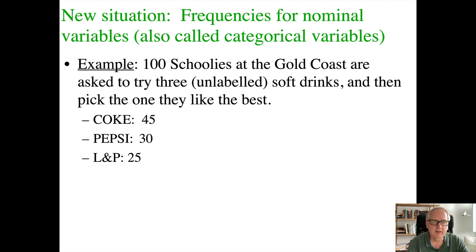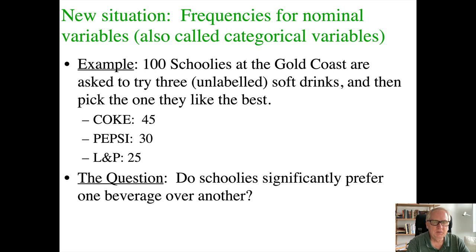Here are the results. Of the 100 Schoolies tested, 45 of them picked the Coke product as the one they liked best, 30 of them picked Pepsi, and 25 of them picked L&P — which is basically the national soft drink of New Zealand. So the question is: do the Schoolies actually significantly prefer one beverage over another, or is that just something that could happen by chance? Is it really telling us that Coke is liked significantly more than Pepsi and L&P?